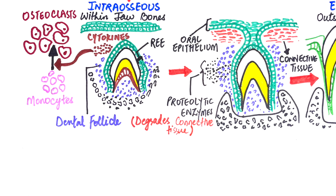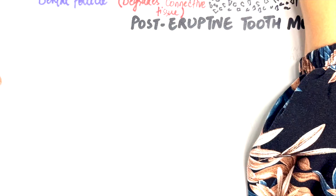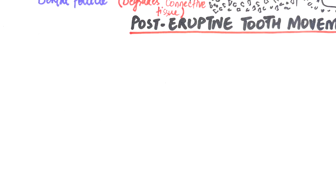On the other hand, in the basal part of the dental follicle, osteoblastic activity ensues to fill up the empty space left behind as the tooth moves upwards towards the oral cavity. After teeth have fully emerged into the oral cavity, ongoing adjustments and shifts occur to maintain alignment and to accommodate for growing jaws. Post-eruptive tooth movements start when the tooth is in functional occlusion.